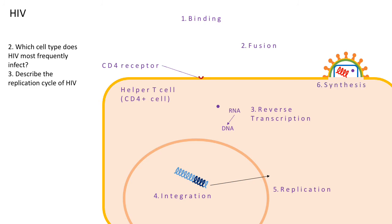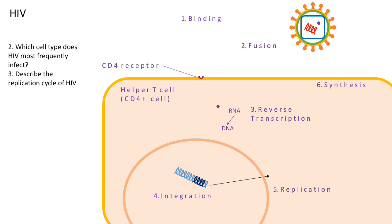The process is called synthesis, and then finally the virus is released as new HIV, which can go on to infect other cells. Obviously, each cell will make several new viruses.